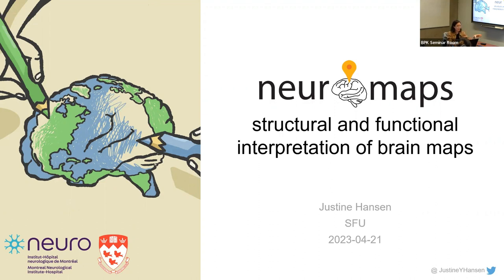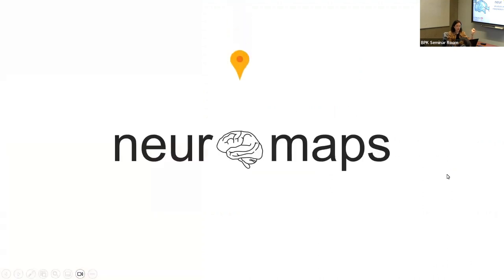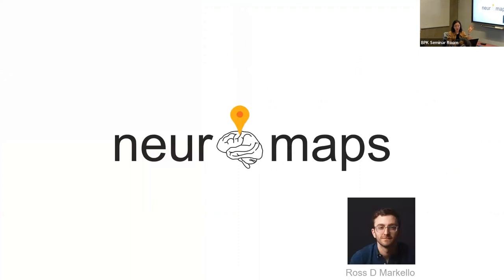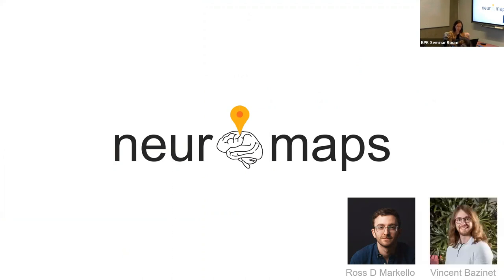The paper is called Neuromaps: Structural and Functional Interpretation of Brain Maps, which is a bit vague. Before I begin, I'll shout out Ross Markellosa — he was a PhD student in the lab. I'm a PhD student in Bratislav Misic's lab at the MNI in Montreal. Ross was really the muscle behind lots of the software. Shout out also to Vince, because I have adapted some of his slides.